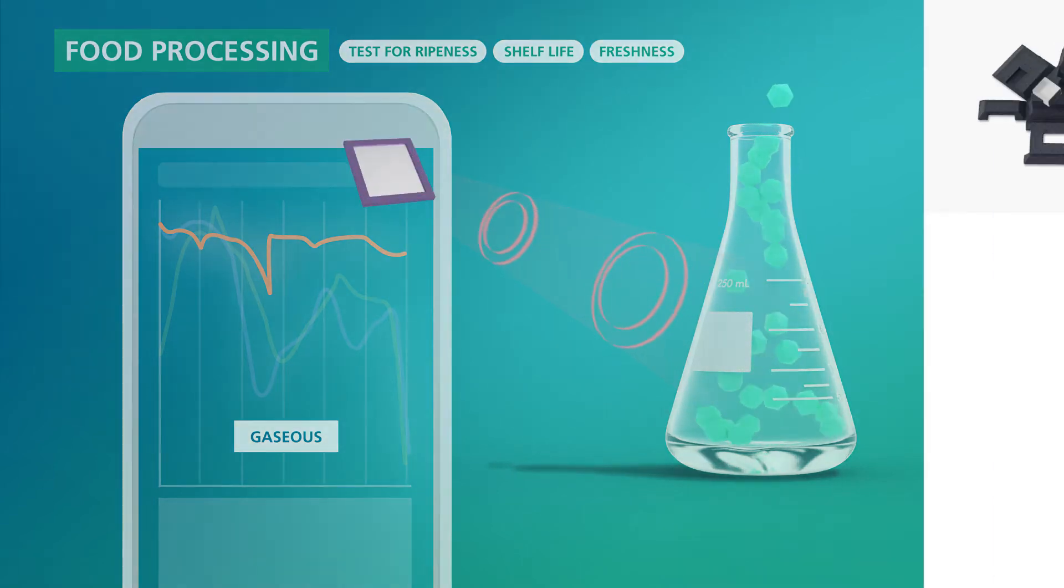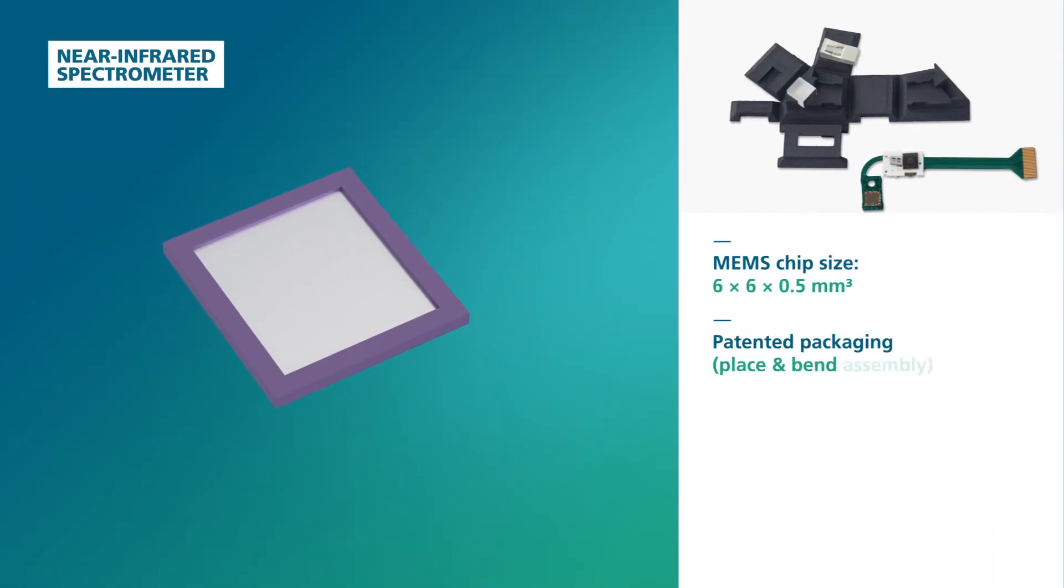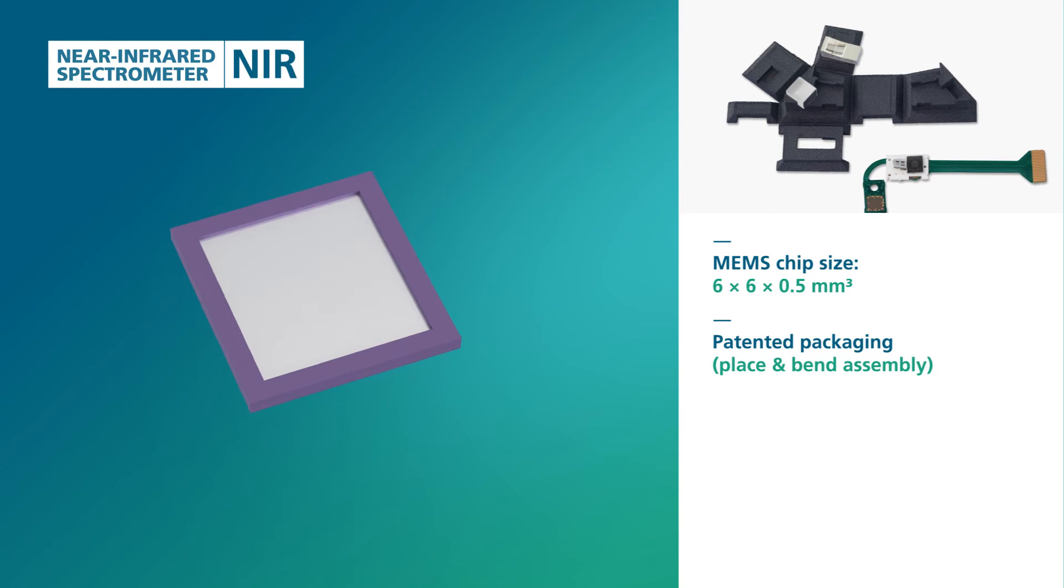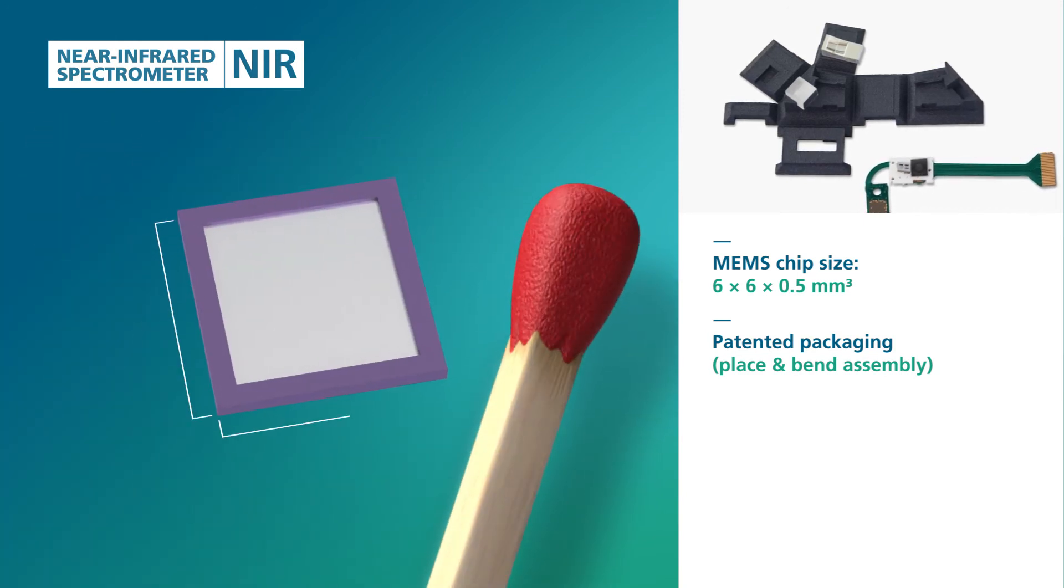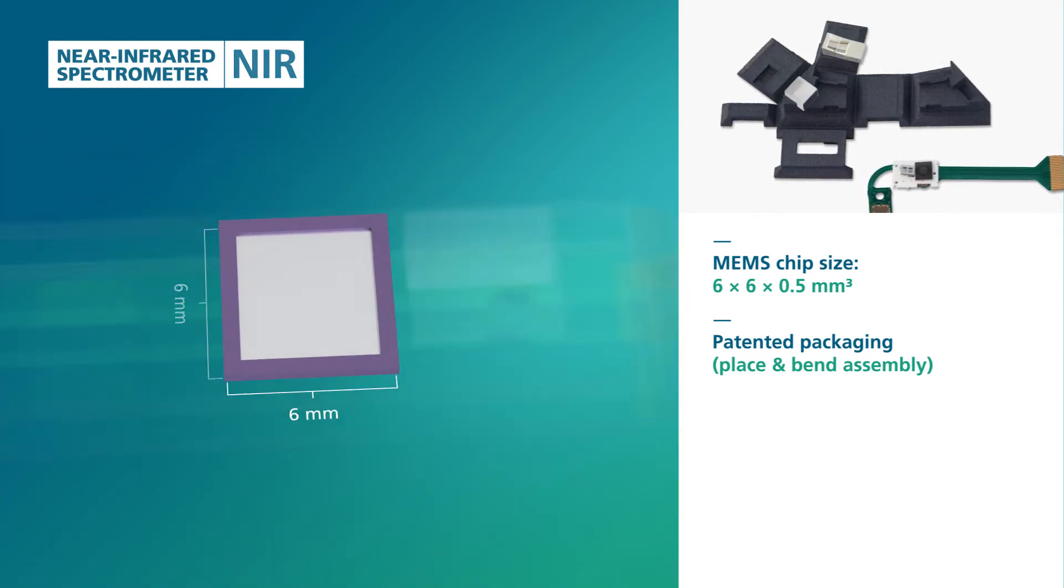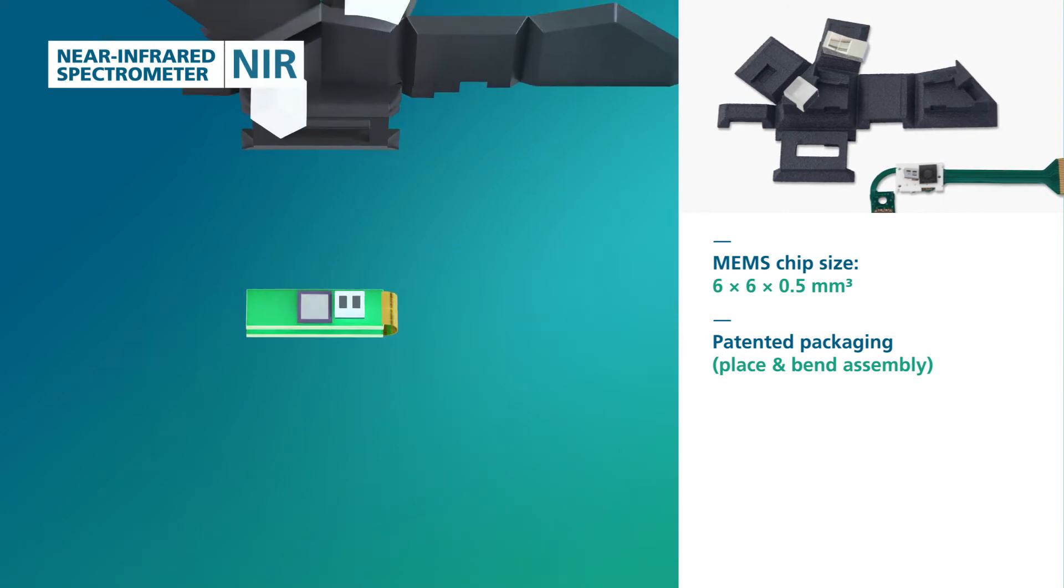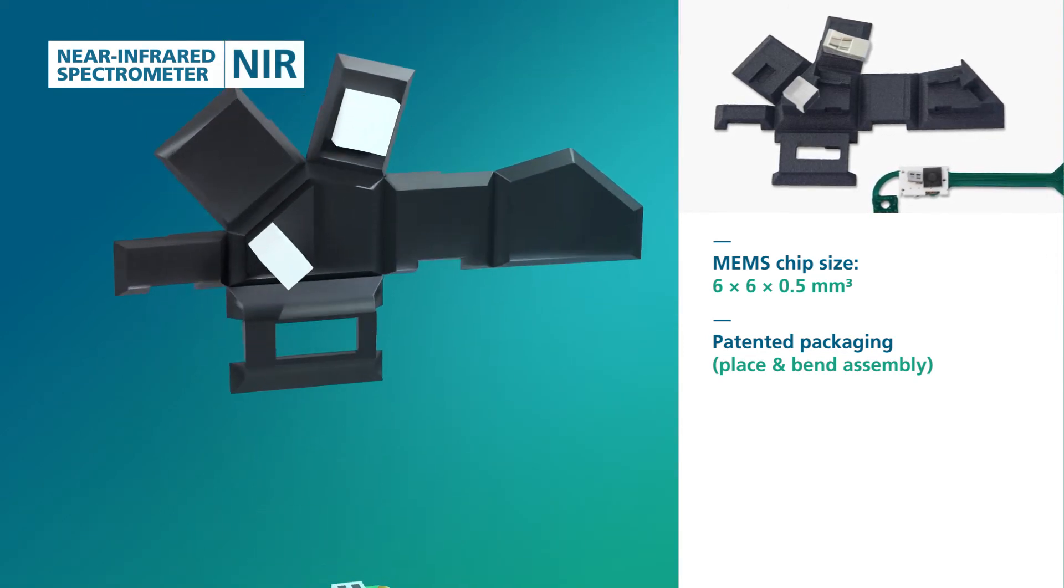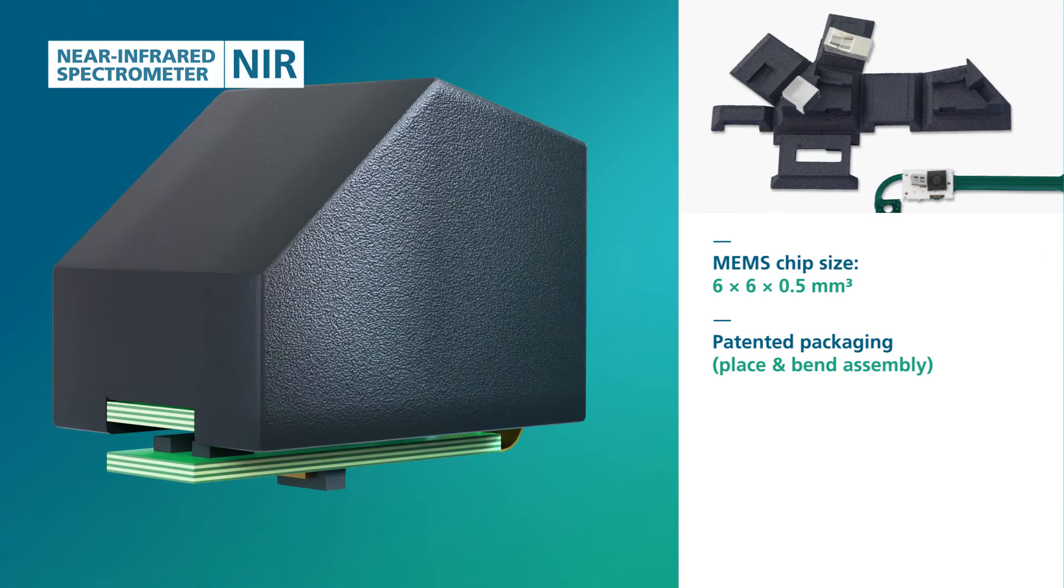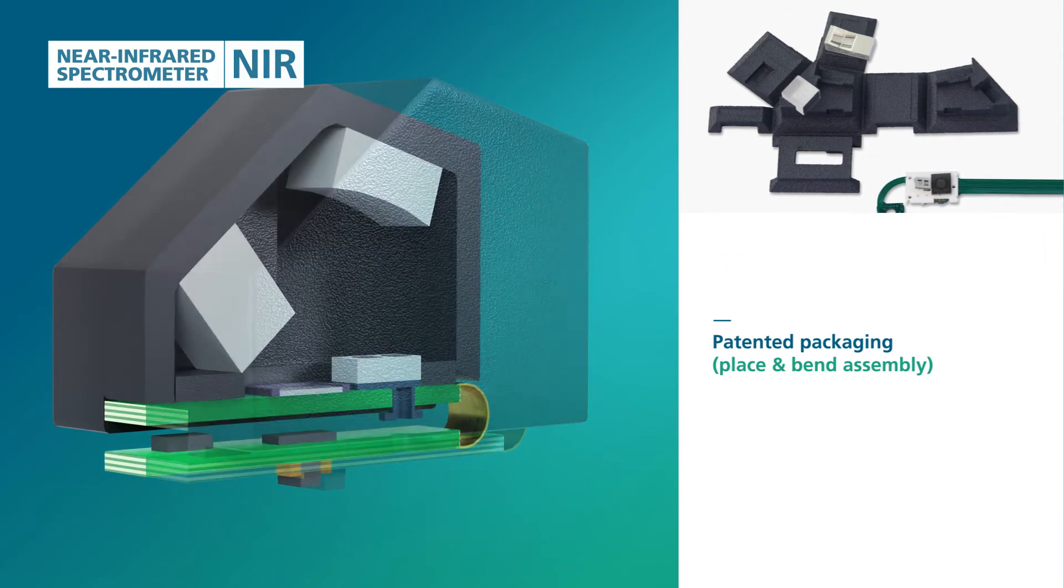The spectrometer is based on a micro-electro-mechanical scanning mirror, a so-called MEMS mirror, measuring only 6x6x1.5mm developed at Fraunhofer IPMS. The heart of the system is a 1D MEMS scanning mirror that illuminates a fixed grating.